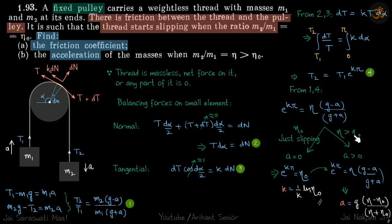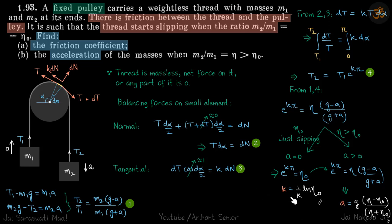For Part 2, eta is greater than eta naught, so acceleration will be non-zero and positive. Substituting the value of k from Part 1 into the equation, we get the value of acceleration in terms of eta naught — that is our answer for Part 2. There are a lot of things in this problem, so I suggest going through it carefully until everything discussed is clear.